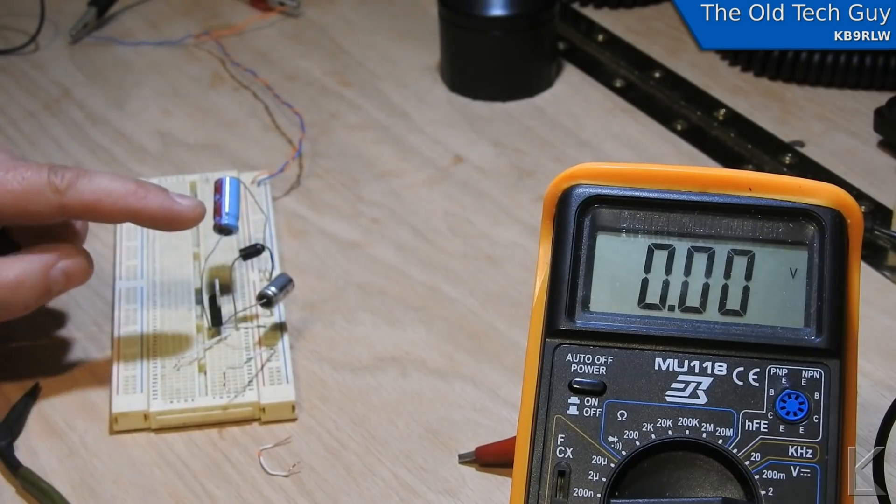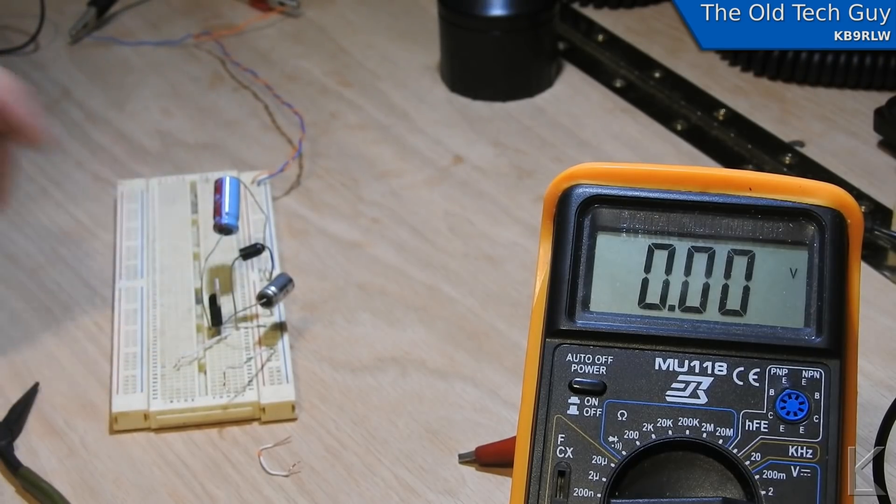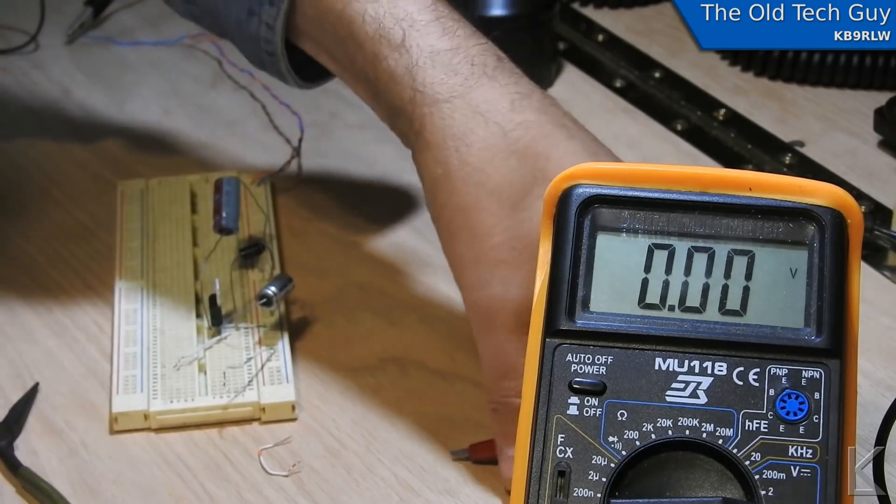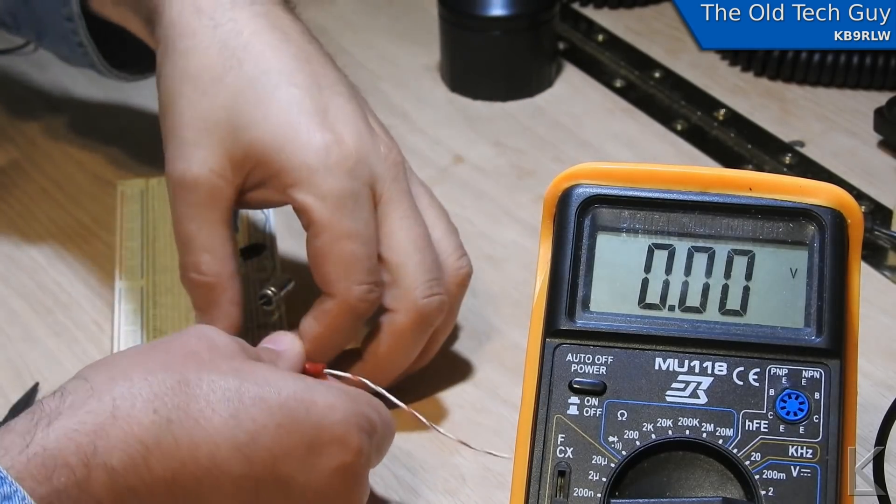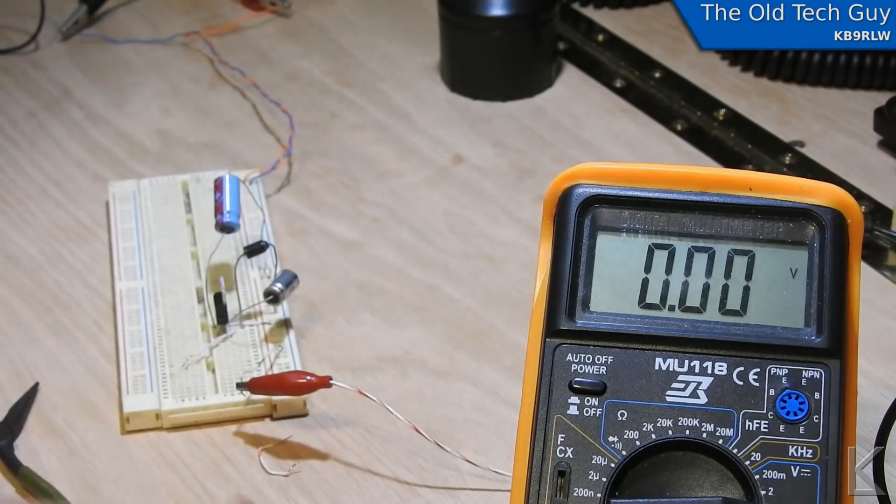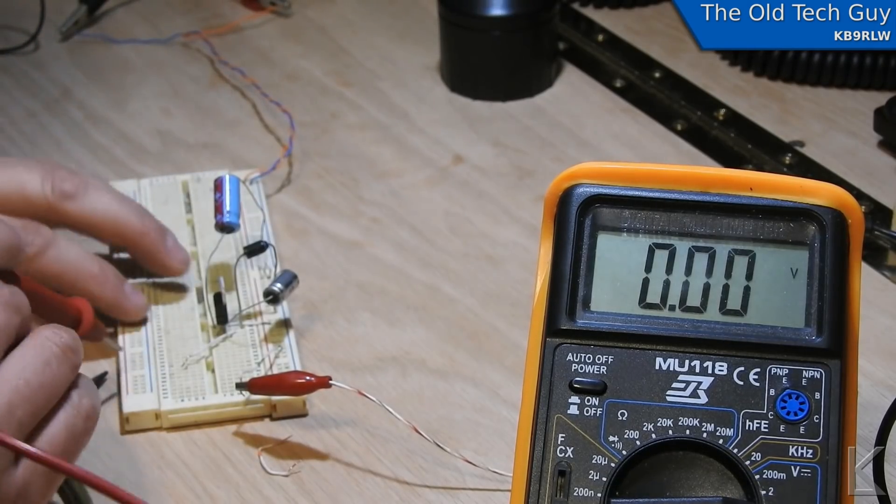So now instead of the ground wire we've got a diode going to ground. Let's power it back up. I'll hook up the ground on my multimeter.